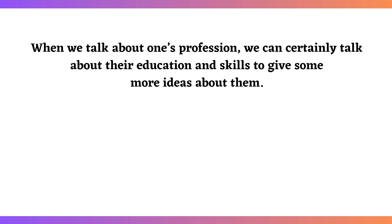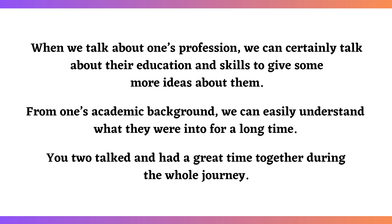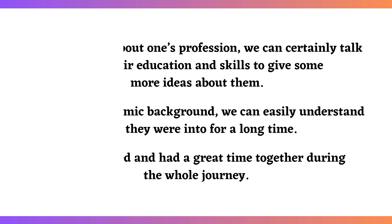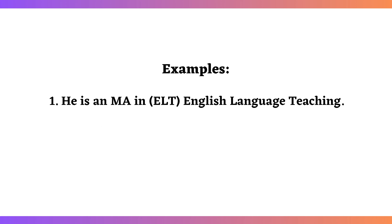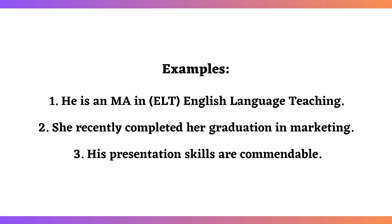Describing education and skills of a person: when we talk about one's profession, we can certainly talk about their education and skills to give more ideas about them. From one's academic background, we can easily understand what they were into for a long time. Examples: He is an MA in English language teaching. She recently completed her graduation in marketing. His presentation skills are commendable.